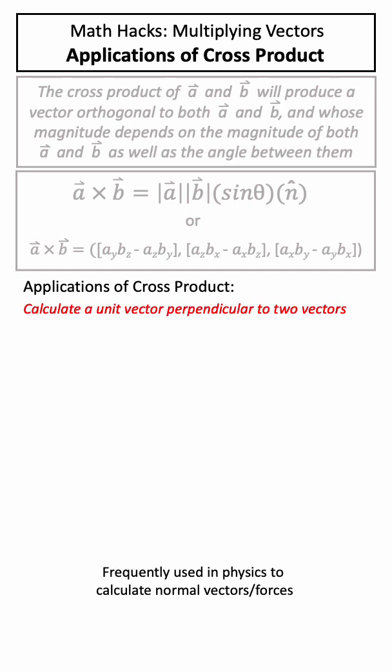We can also use cross product to calculate a unit vector perpendicular to our two vectors. If we have two vectors a and b and solve for the cross product, this will be perpendicular to both a and b and we can use this formula here to solve for the unit vector in this direction.